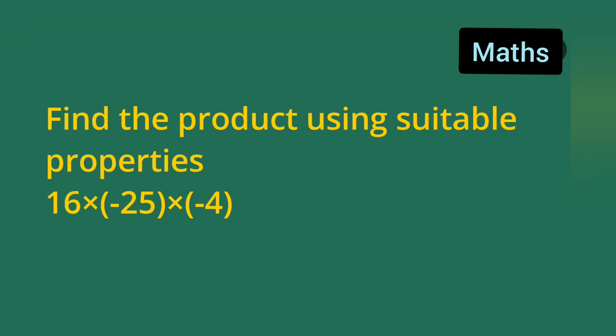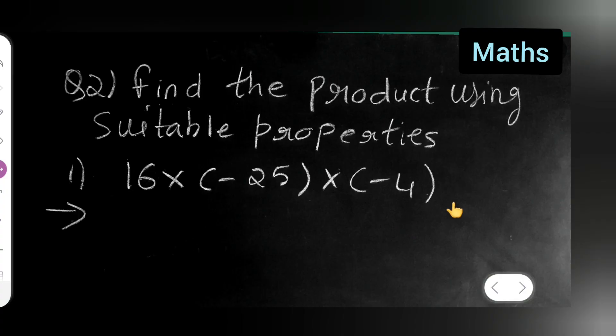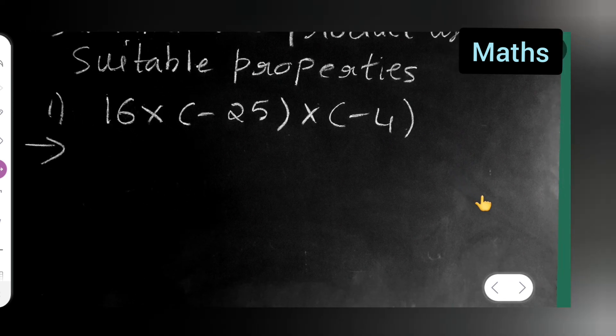Now let us see, find the product using suitable properties. First you all can take down the question: 16 multiplied by minus 25 multiplied by minus 4. So first what you all need to do is...